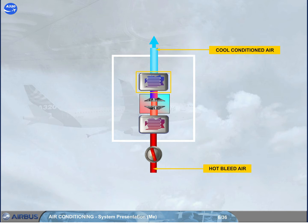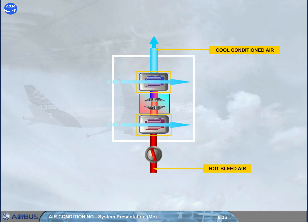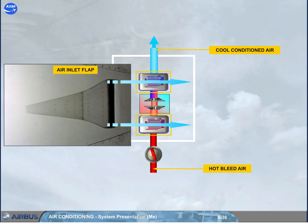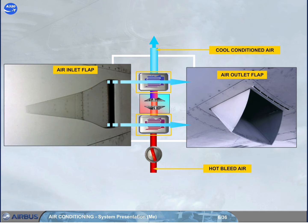Two of the stages are heat exchangers. They cool the hot bleed air using the flowing ambient air. This flow of air enters via the ram air inlet flap and exits via the ram air outlet flap.